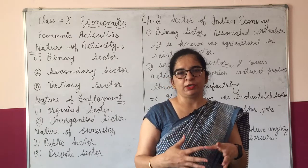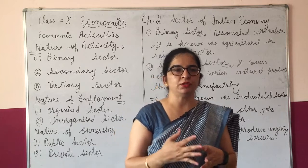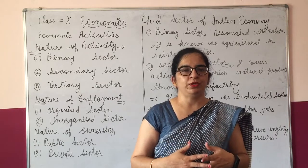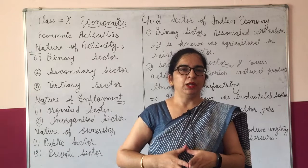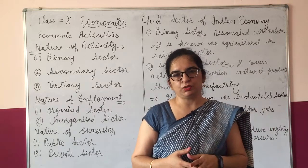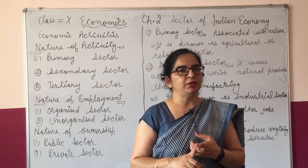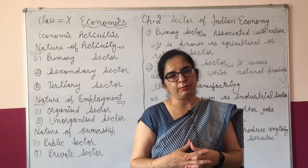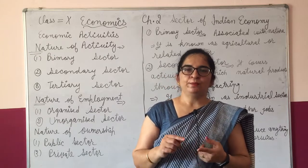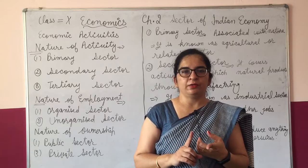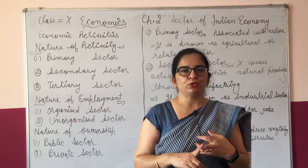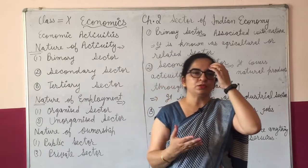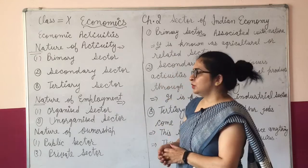If we talk about our activities — on the first page of this chapter — it says we do many activities for our earning and livelihood. These are economic activities: activities we do for monetary gain. We do many activities like farming, agriculture, shops, business, and industries. On the basis of these economic activities, we can divide them into 3 parts.